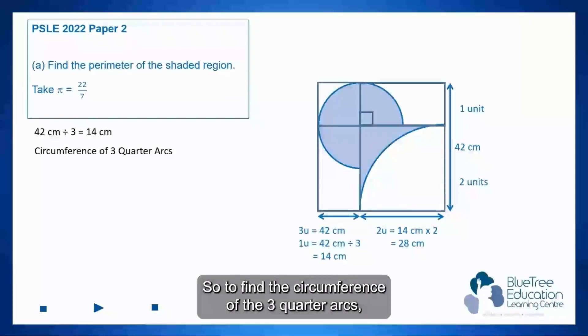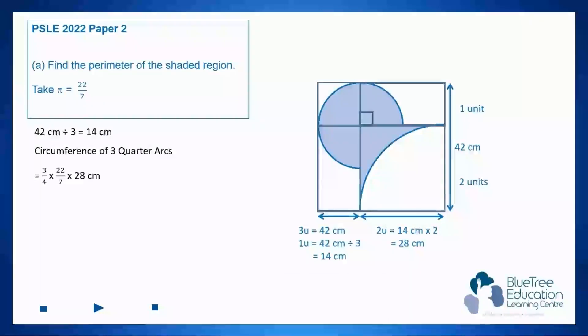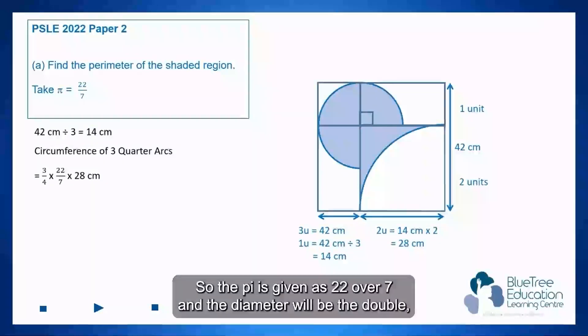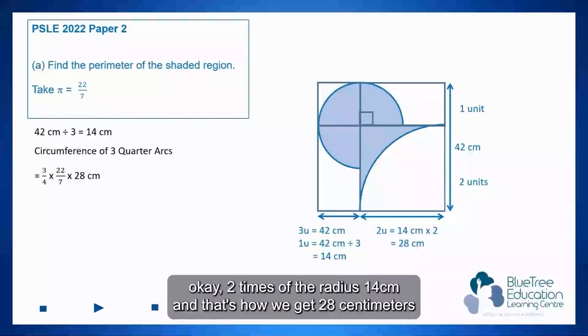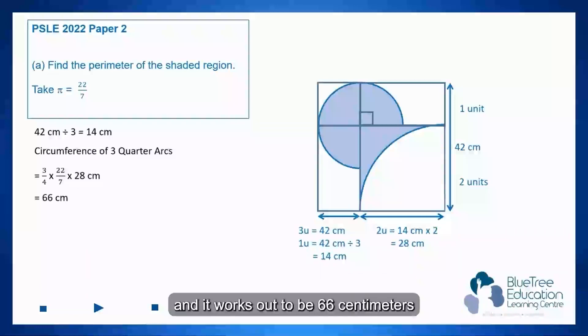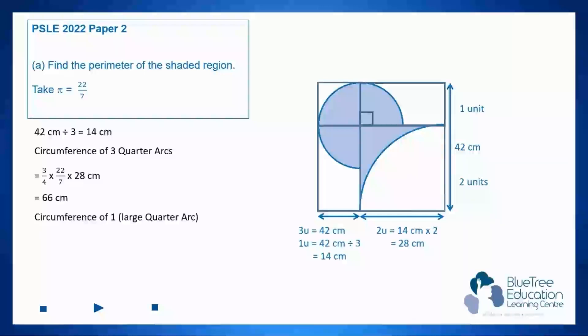So to find the circumference of the three-quarter arcs it will be three-quarter times π d. So the π is given as 22 over 7 and the diameter will be double, two times the radius 14 cm, that's how we get 28 centimeters and it works out to be 66 centimeters.